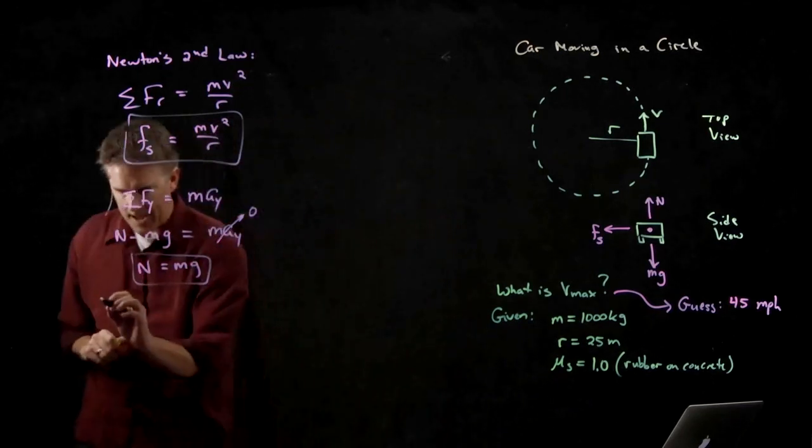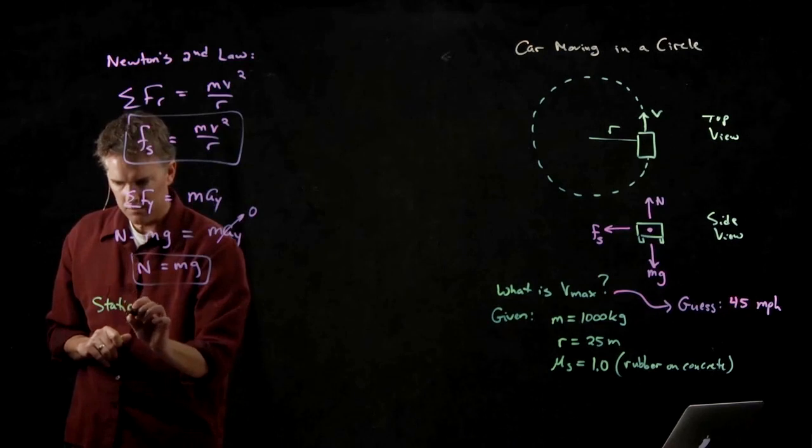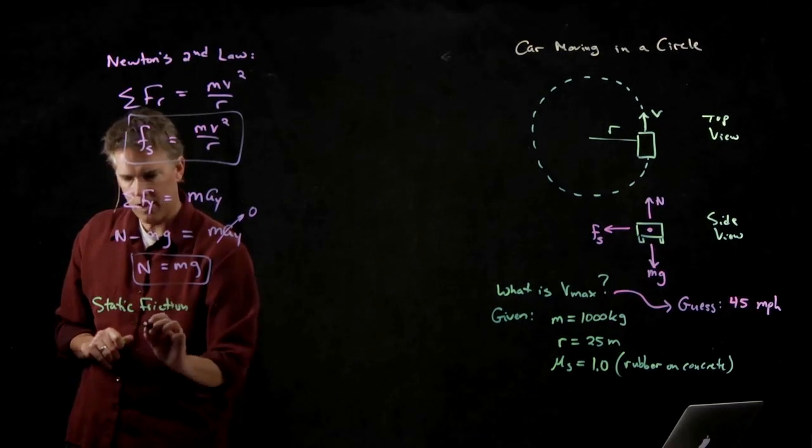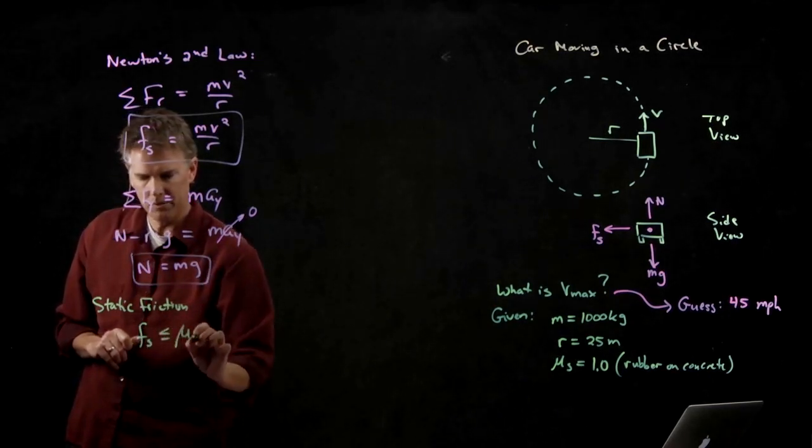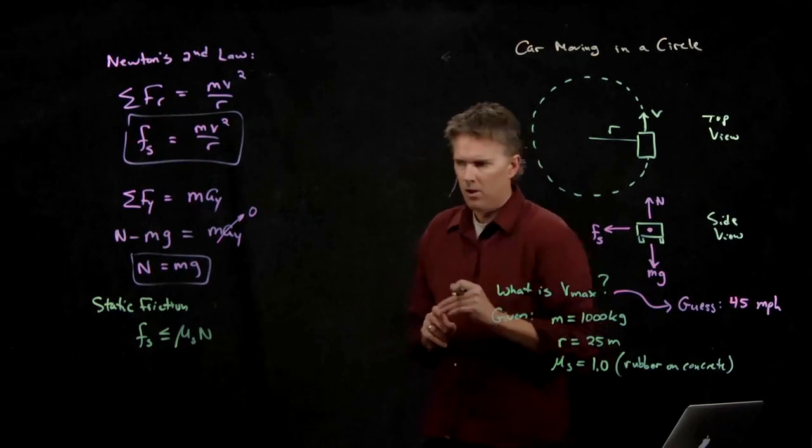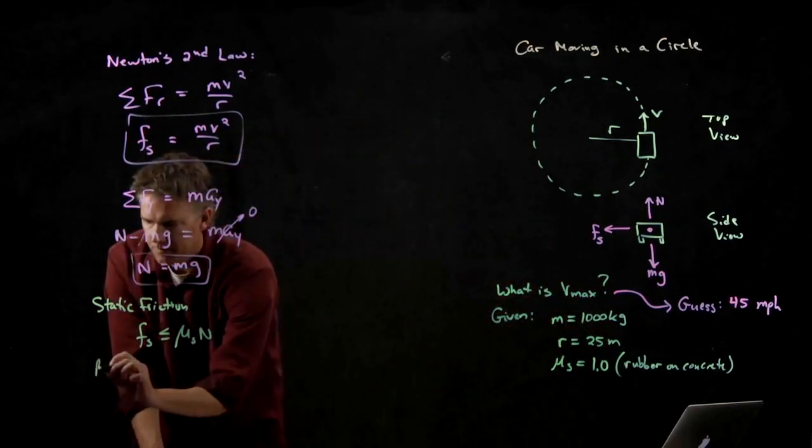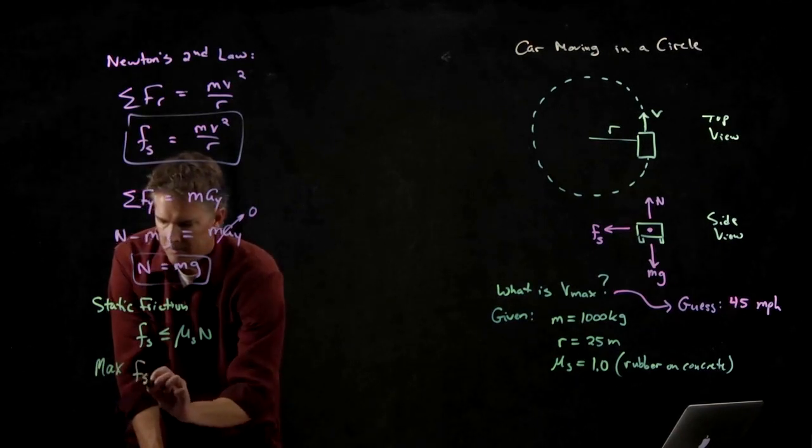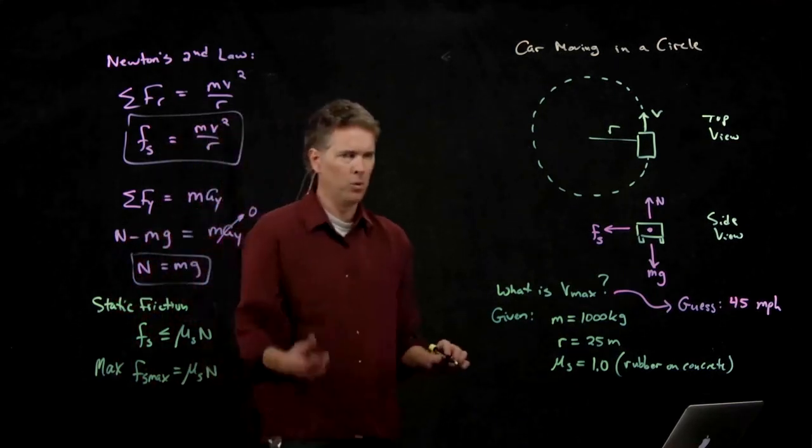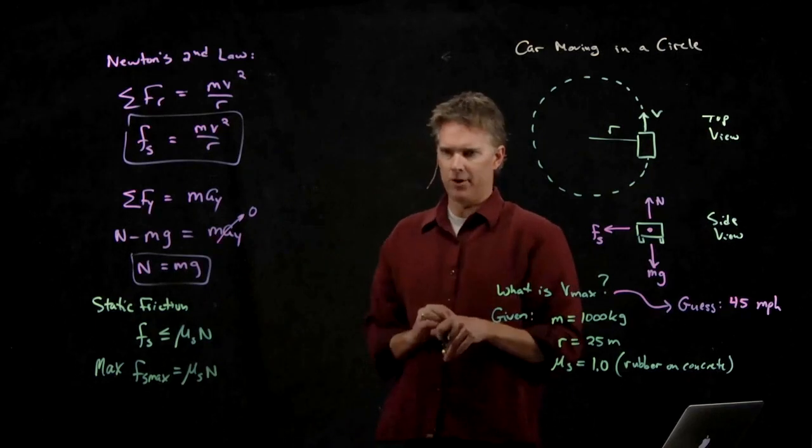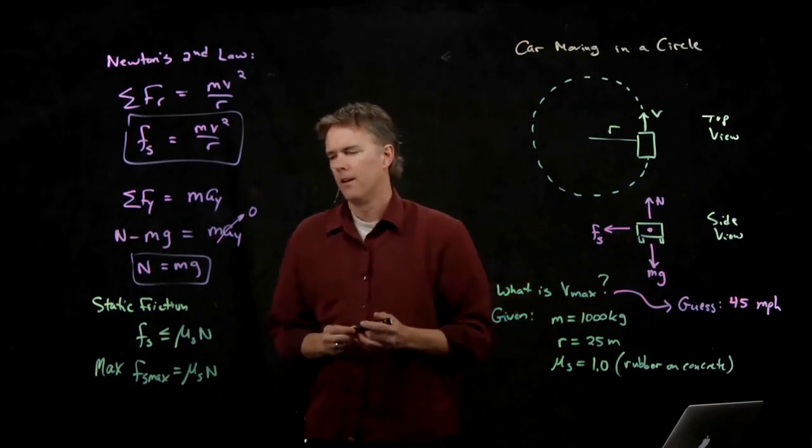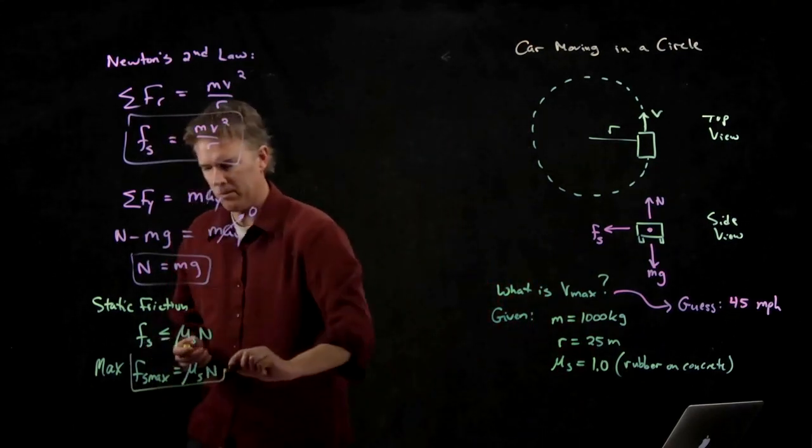That looks pretty good, except we're looking for v max, and I don't think we have quite enough information now because we have this frictional force that we need to know a little bit more about. So what is static friction? Static friction, you'll remember, is this. F sub s is less than or equal to mu s times the normal force. So what is the maximum? F sub s max is just when it's equal. If we want to go as fast as possible, we're going to take advantage of the maximum static friction, right? Your tires are just about to break free, and you're just about to skid out.